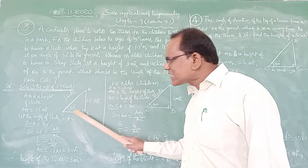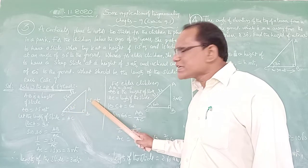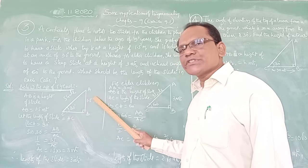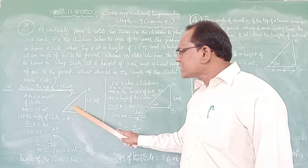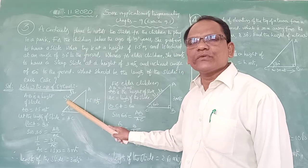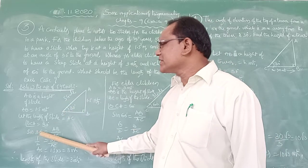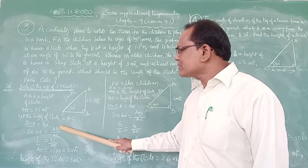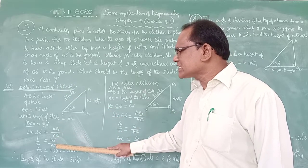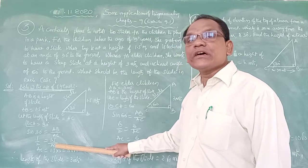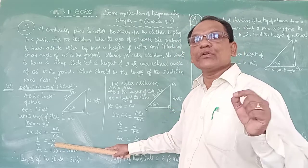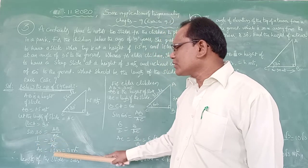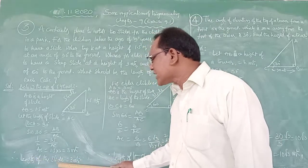This is a right-angle triangle. We have the opposite side to 30 degrees and we want the hypotenuse, so we use the sine ratio. Sin 30 degrees equals opposite side by hypotenuse, that is AB by AC. AB is 1.5 meters, so sin 30° = 1.5 / AC. Sin 30° = 1/2, therefore by cross multiplication, AC × 1 = 2 × 1.5 = 3 meters. Therefore the length of the slide for children below age 5 is 3 meters.